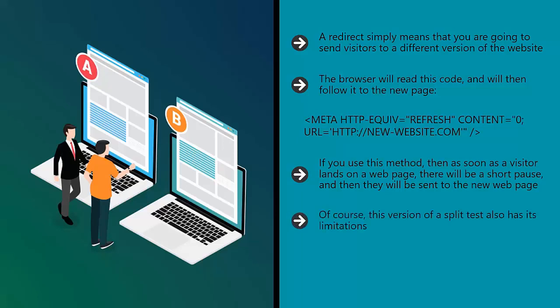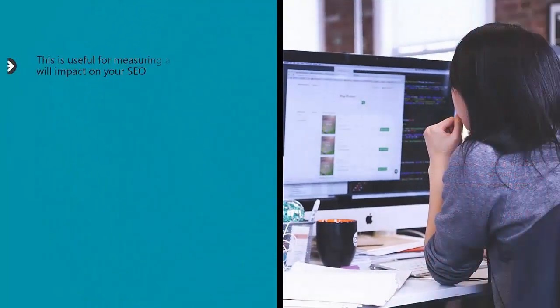Of course, this version of a split test also has its limitations. After all, there's no way for Google to alter its ranking depending on which page performs best, because the two versions of the page are one and the same as far as Google is concerned — meaning that they will only rank once depending on which version Google took into account. So how can this be used to monitor your SEO performance? This is useful for measuring a host of factors that will impact on your SEO, such as bounce rates, CTR (click-through rate), and more.